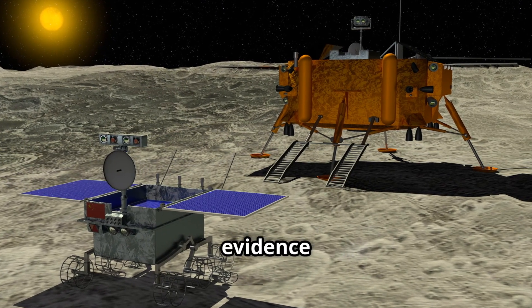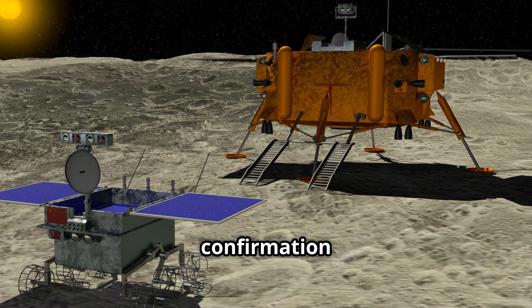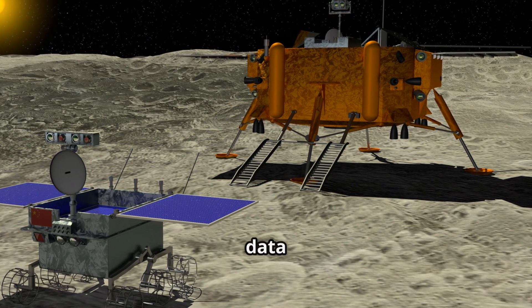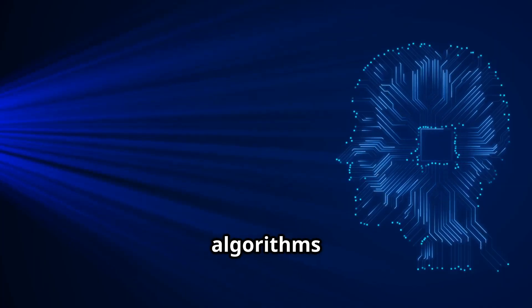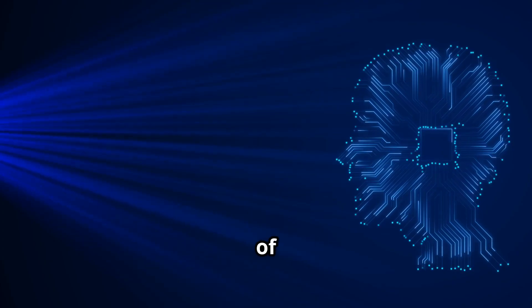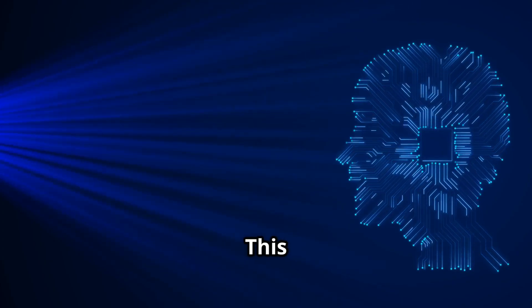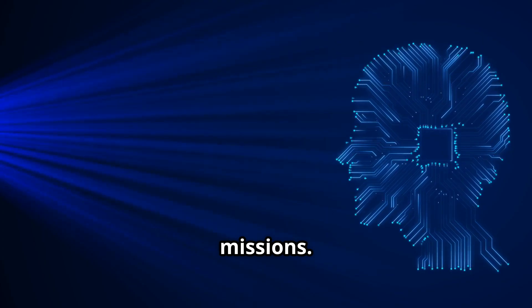Lunar ice detection: NASA's Lunar Reconnaissance Orbiter and India's Chandrayaan-1 provided strong evidence of ice deposits in permanently shadowed craters at the moon's poles. But confirmation and mapping required sophisticated data processing, much of it led by AI. AI algorithms processed multi-spectral imagery, radar data, and topographic maps to pinpoint exact locations of ice beneath the surface. This information is now driving landing site selection for upcoming missions.